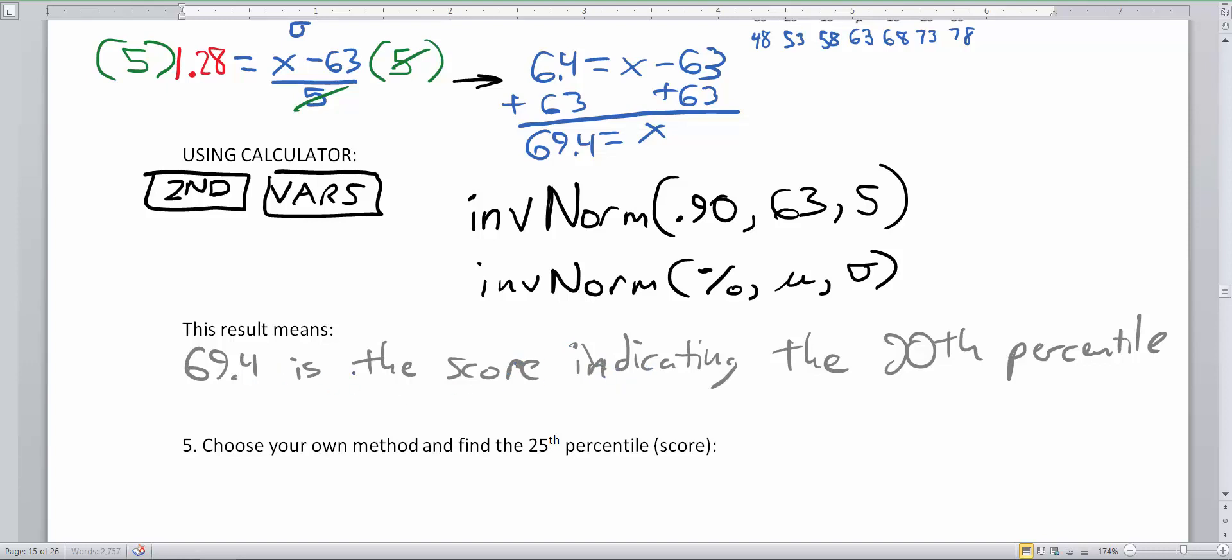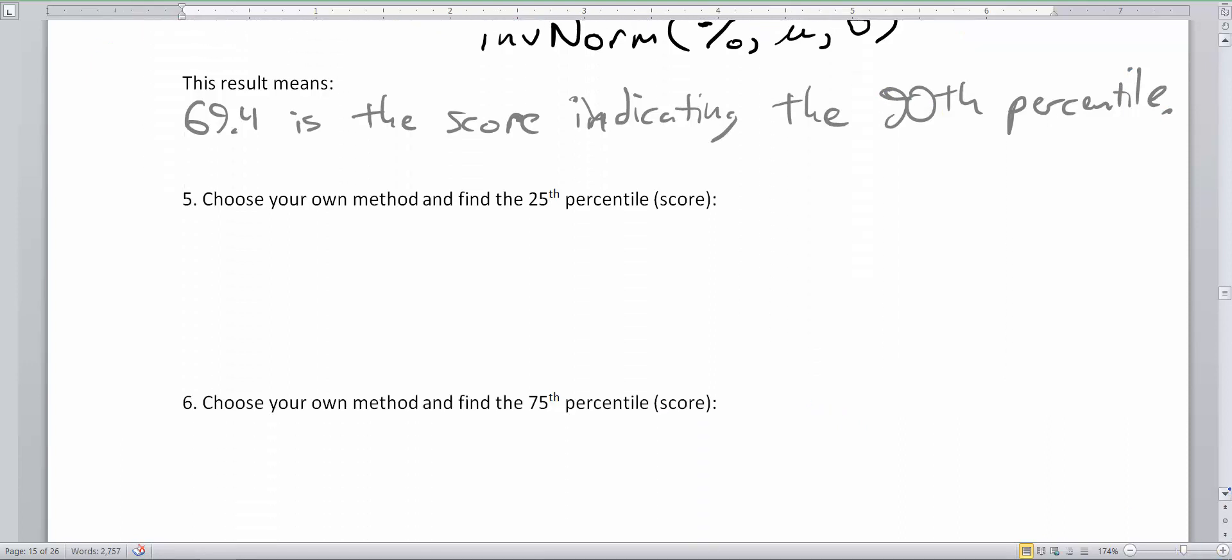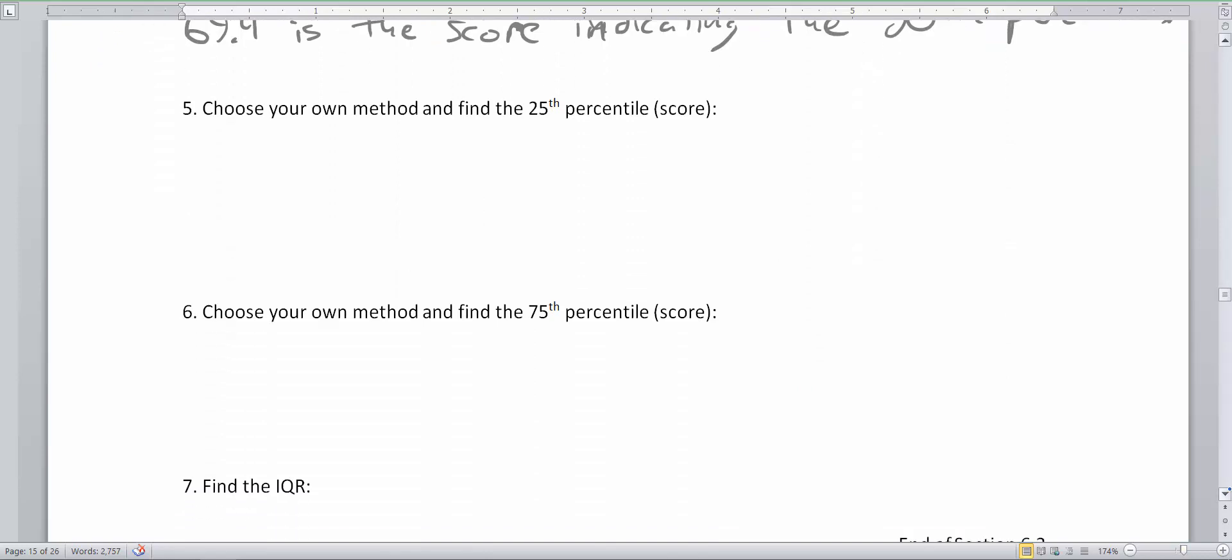So again, 69.4 is the score indicating the 90th percentile. Now, choose your own method to find the 25th percentile. And then choose your own method to find the 75th percentile.